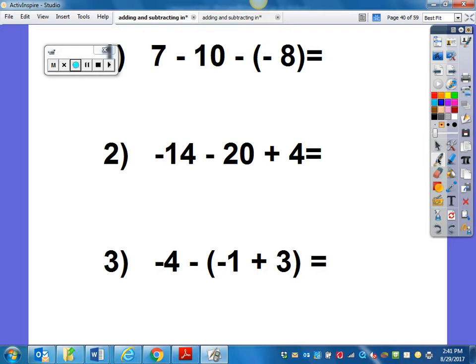If I look at number one, the first thing that I have to do is 7 minus 10. All I'm doing is taking the first two numbers and doing that subtraction. So 7 minus 10 is negative 3.